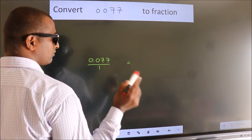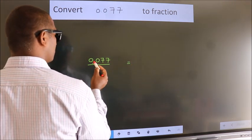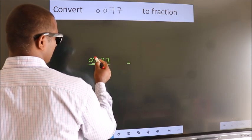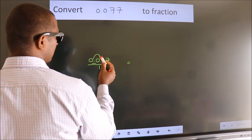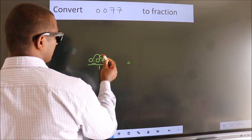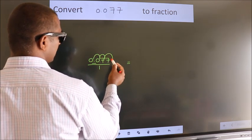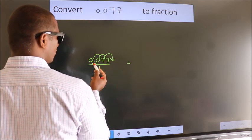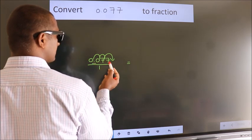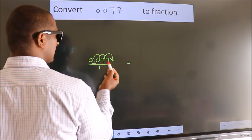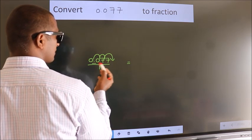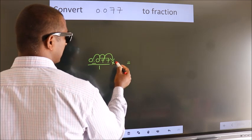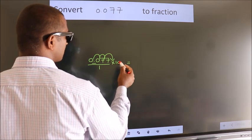we have to move this decimal after 1, 2, 3 numbers. To move this decimal after 3 numbers, we should multiply it with 1000.